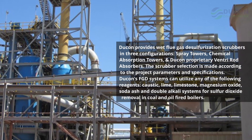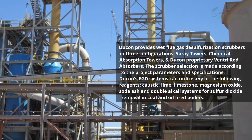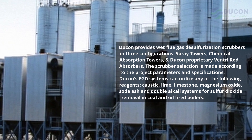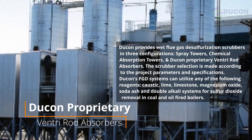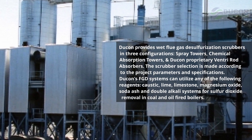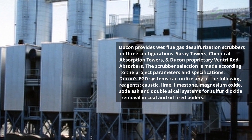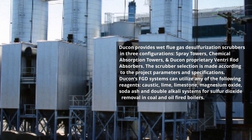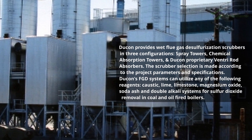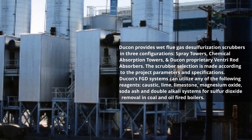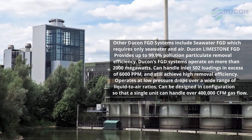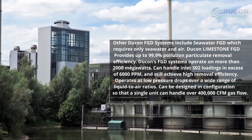Dukon provides wet flue gas desulfurization scrubbers in three configurations: spray towers, chemical absorption towers, and Dukon's proprietary venturi rod absorbers. Scrubber selection is made according to project parameters and specifications. Dukon's FGD systems can utilize reagents including caustic, lime, limestone, magnesium oxide, soda ash, and double alkali systems for sulfur dioxide removal in coal and oil fired boilers. Other Dukon FGD systems include seawater FGD, which requires only seawater and air.